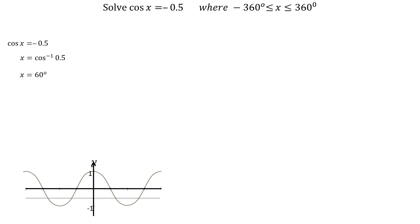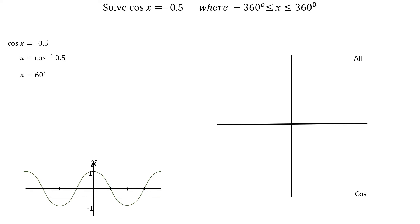As the original equation was negative, we need to show the 60 degree angles where cos is negative in the CAST diagram. Cos is negative in the second and third quadrants, so we show 60 degrees from the horizontal in these two quadrants.